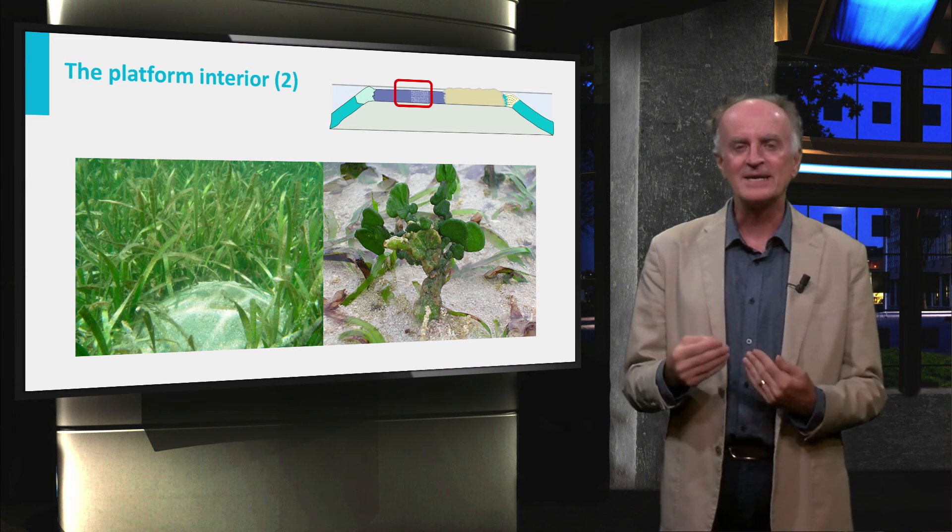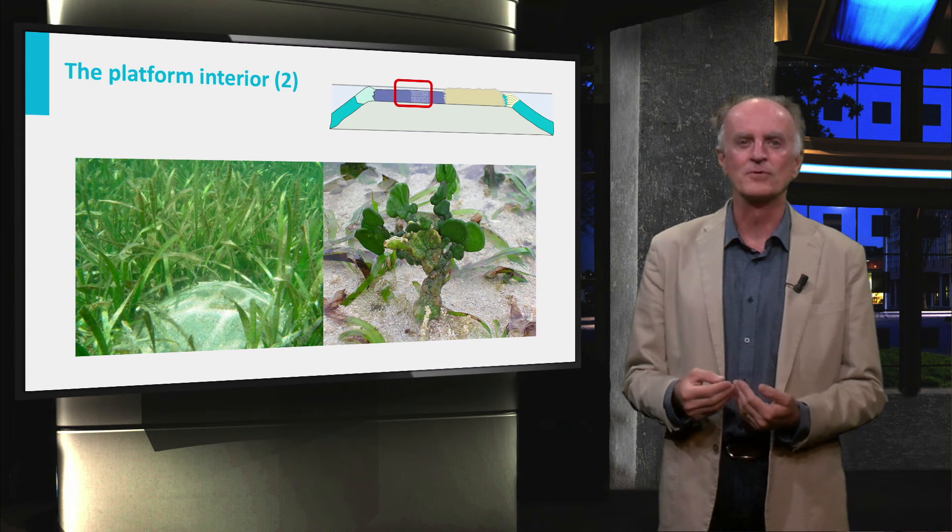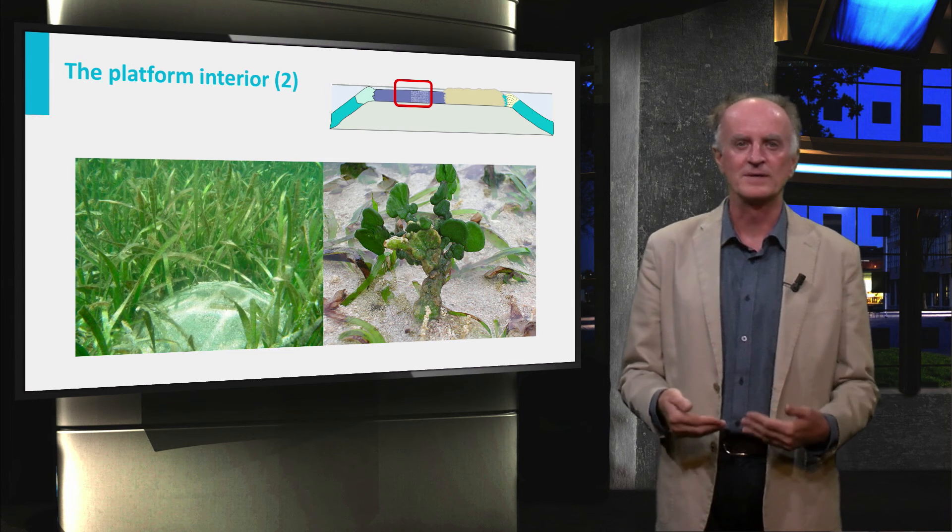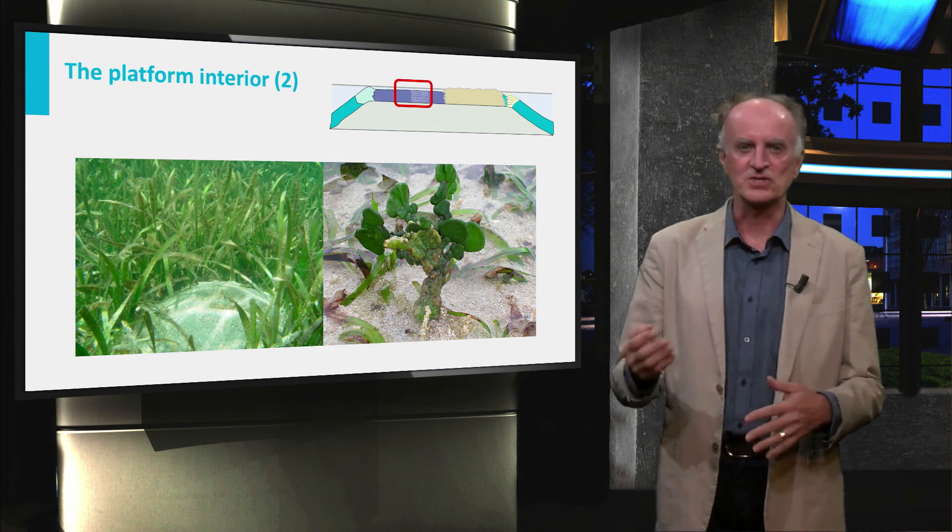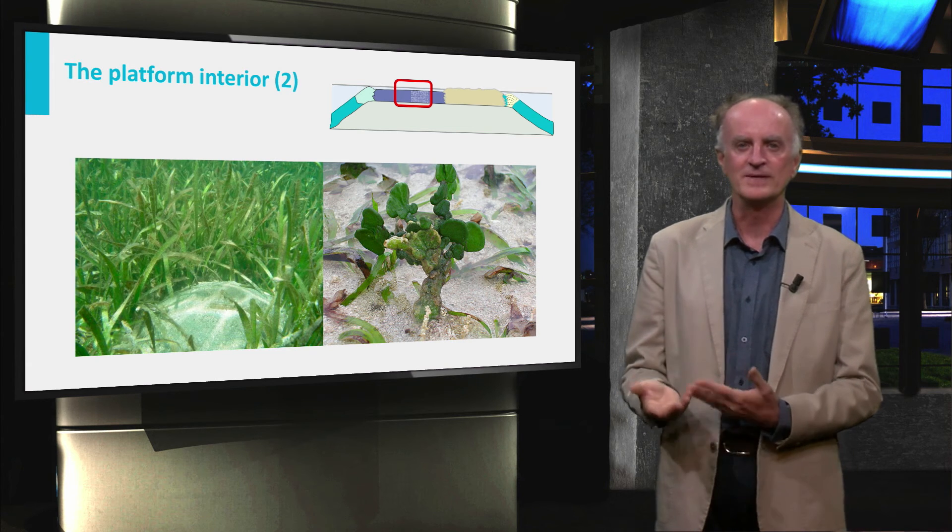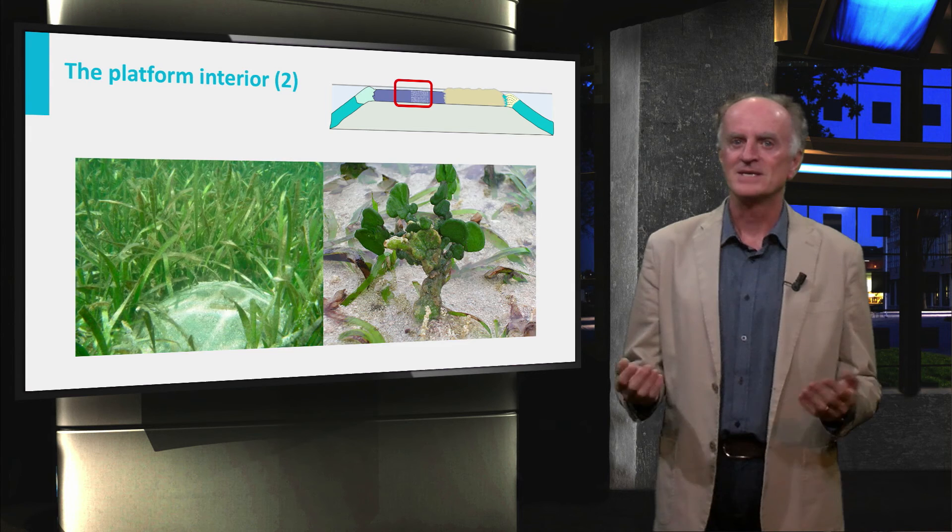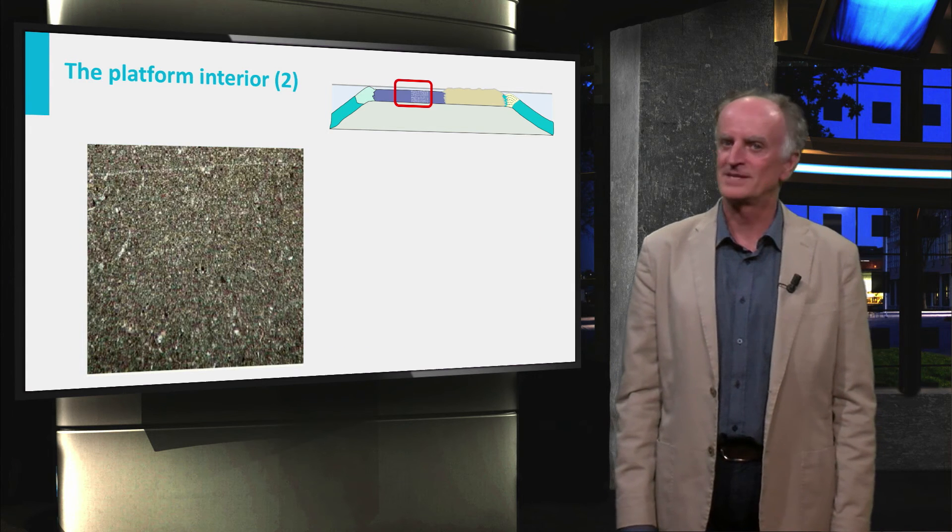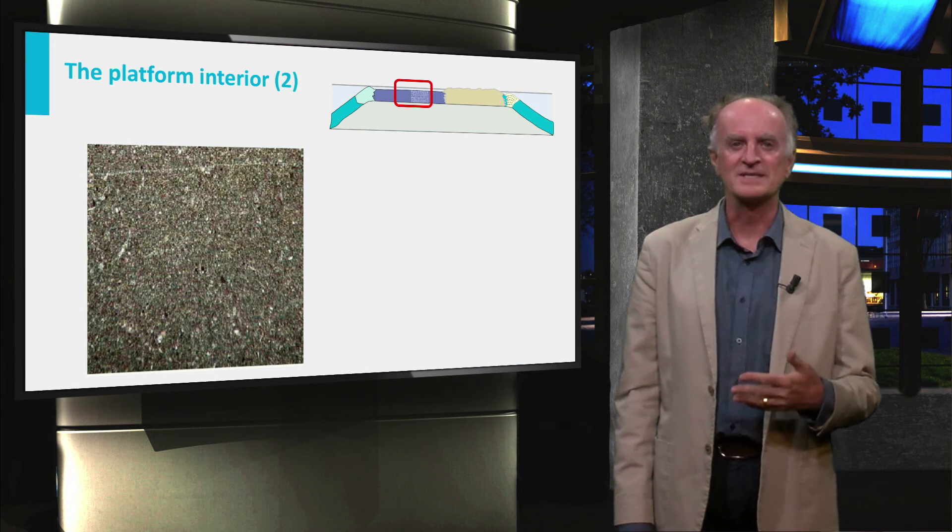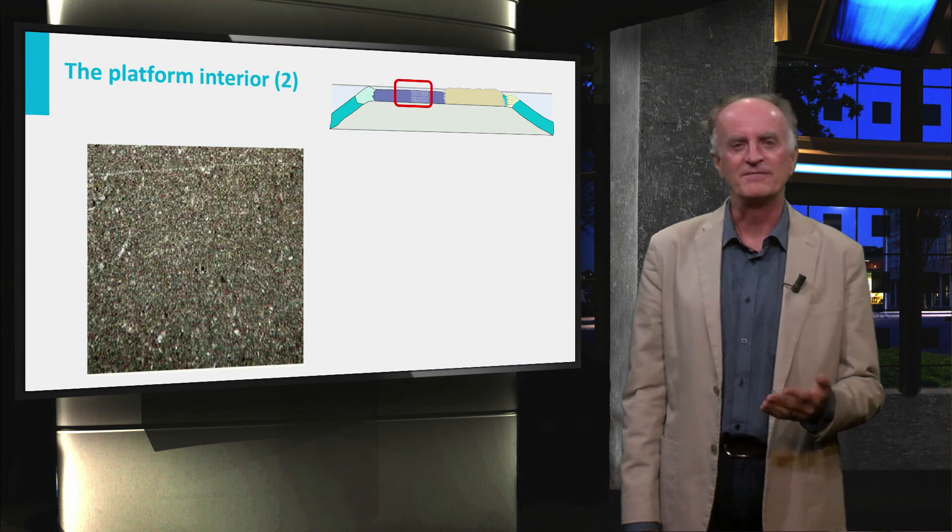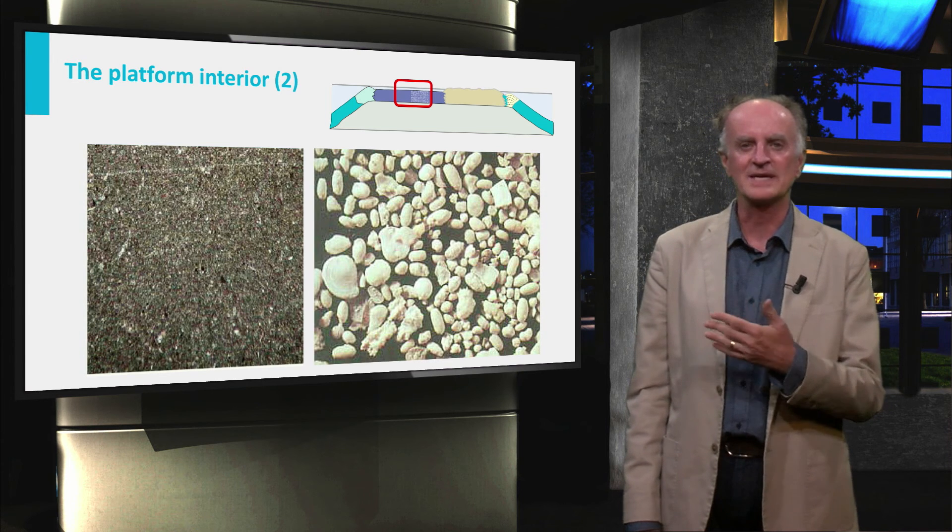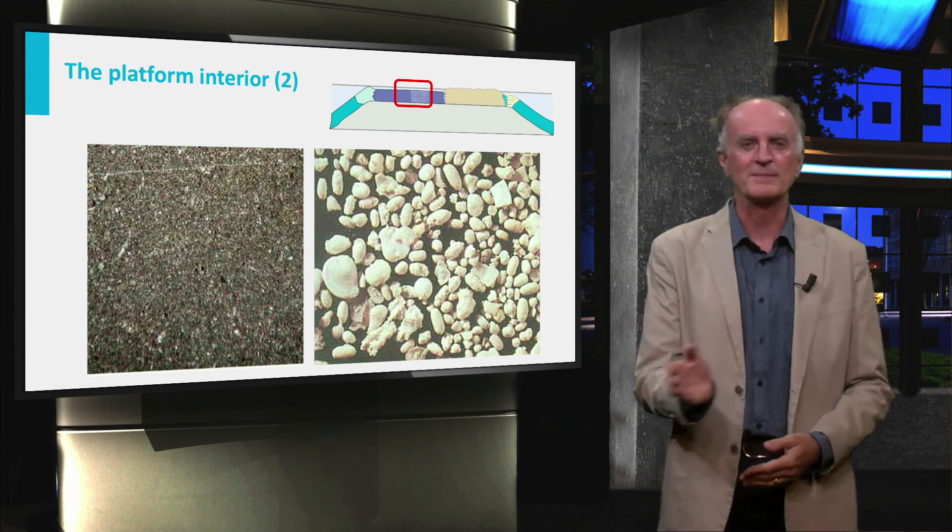All these very tiny carbonate particles form the carbonate mud which we call micrite, once transformed into rock. Organisms such as shrimps and worms often burrow through the sediments searching for food. This is what a micrite looks like in thin section. Pretty monotonous indeed. But micrites are not the only sediments found in the platform interior, and the fine-grained sedimentation is sometimes interrupted by coarser-grained sediments brought by storms from the platform margin.